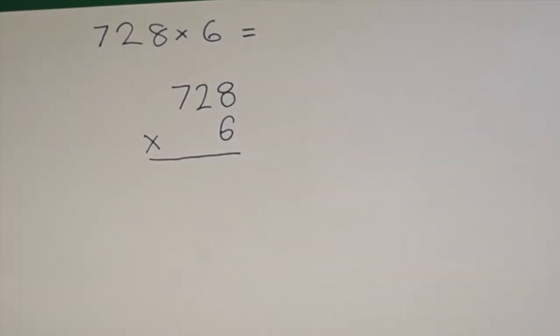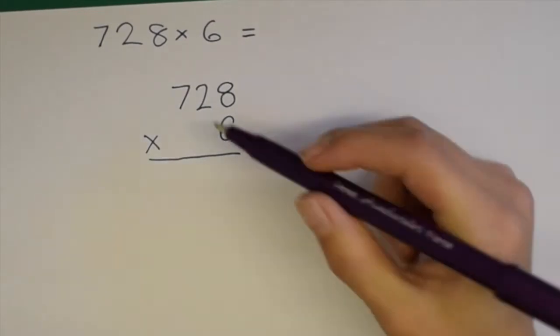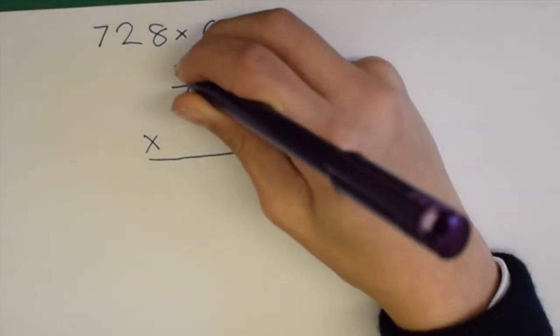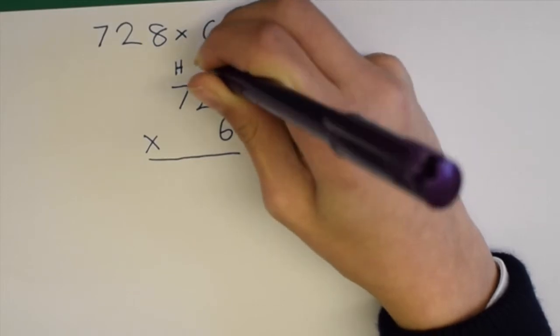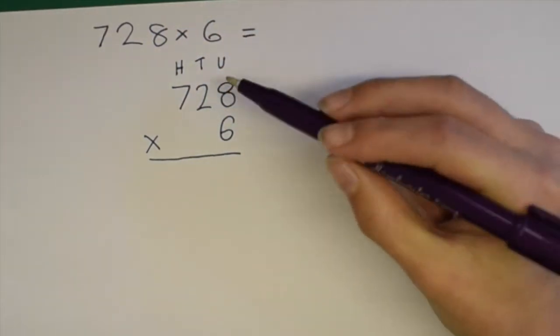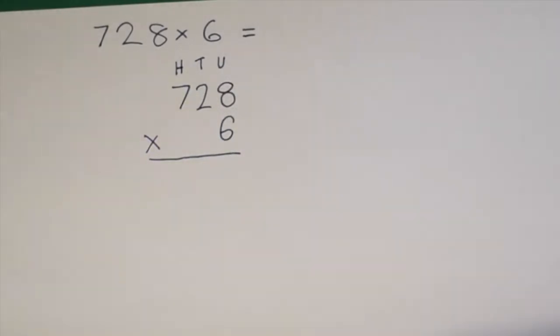We can partition 728 down and use the ladder method. And we can also write H, T, and U, which stand for hundreds, tens, and units, to help us.